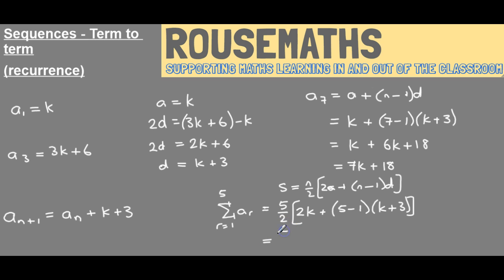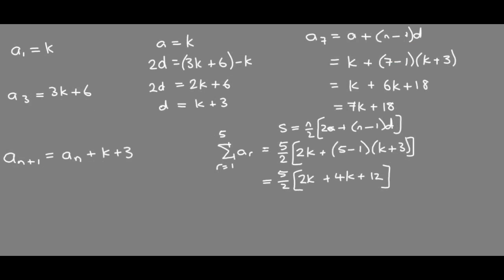So if we complete our working out, we get 2k and then times 4 by the k plus 3 in the brackets and it gives me 5 over 2 times 6k plus 12. So if we halve everything inside and then times it by 5, we find out that the sum of the first five terms of this sequence is 15k plus 30.